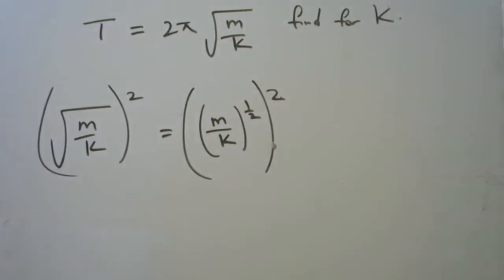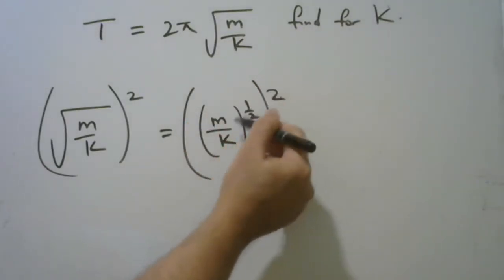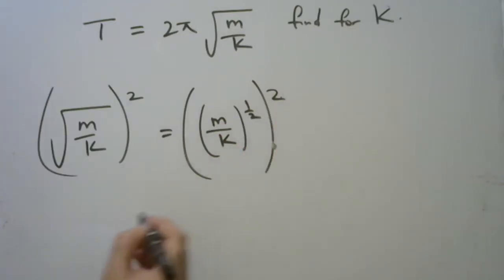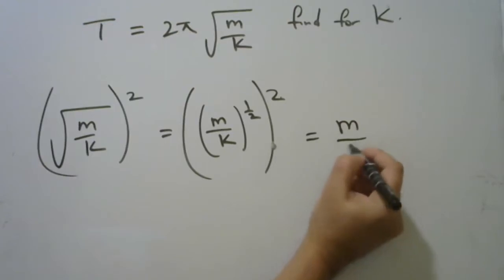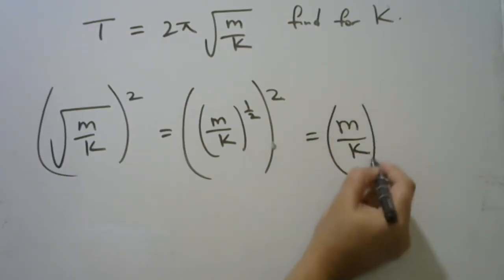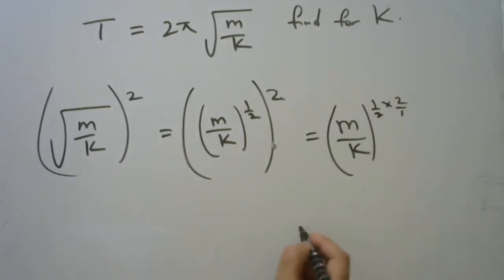Now, this is like m, this is like n, or you can say a times b. You multiply these two here, you're going to get m upon k to the half times 2 upon 1, and this is going to give you m upon k, right?